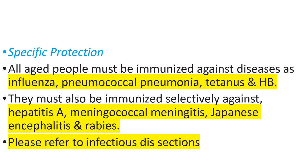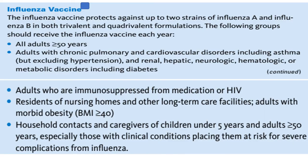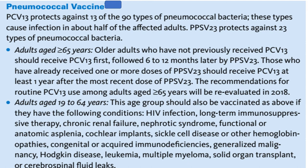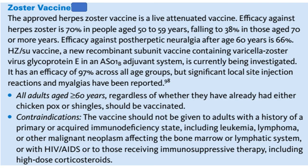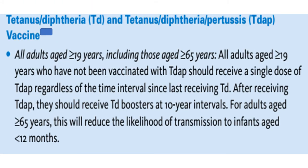Specific protection: all aged people must be immunized against influenza, pneumococcal pneumonia, tetanus, and hepatitis B. They must also be selectively immunized against hepatitis, meningococcal meningitis, and Japanese encephalitis. Vaccines covered include influenza vaccine, pneumococcal vaccine, zoster vaccine, and tetanus diphtheria and tetanus-diphtheria-pertussis vaccines.